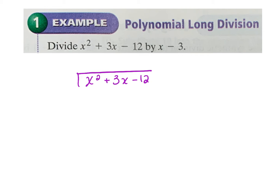Because these are individual monomials, when we divide we only look at x compared to x² to determine what to multiply by. What do I need to multiply x by to get x²? I multiply x by x. I line that up with the matching term. Then I multiply x by the entire divisor: x times x is x², and x times negative 3 is negative 3x.